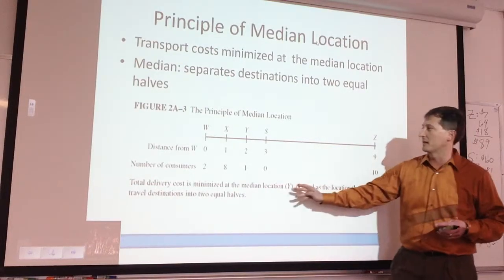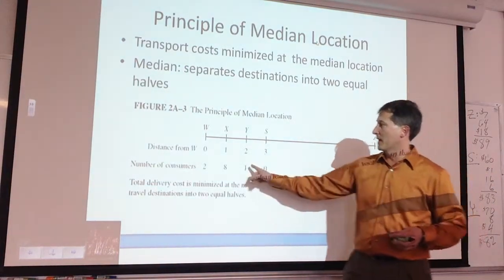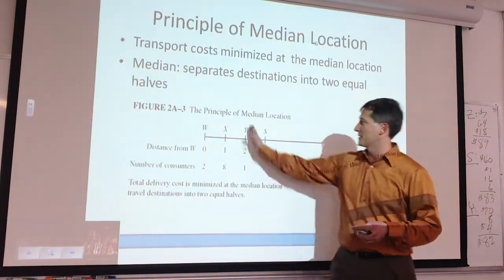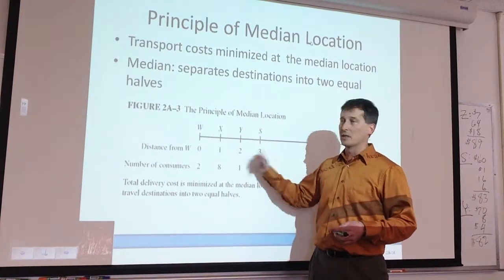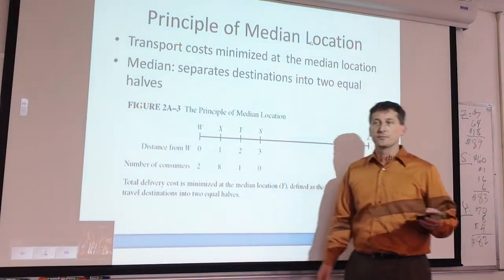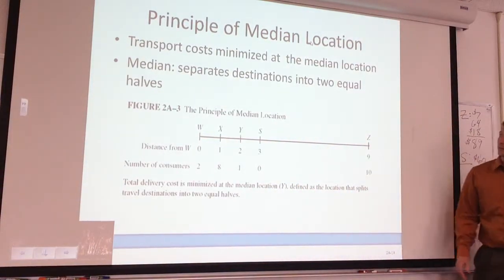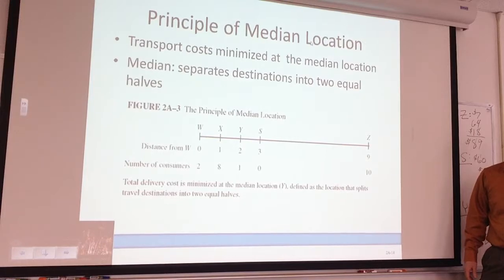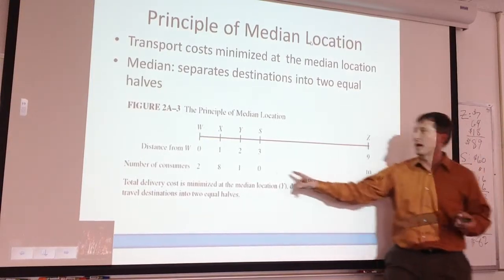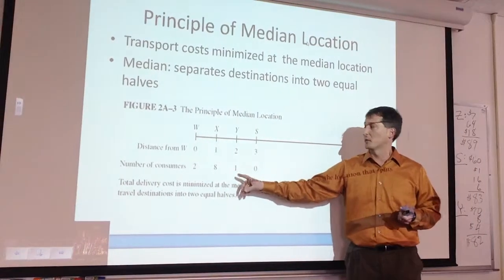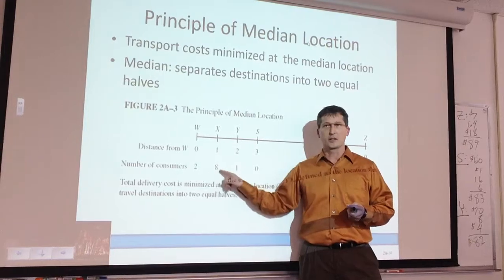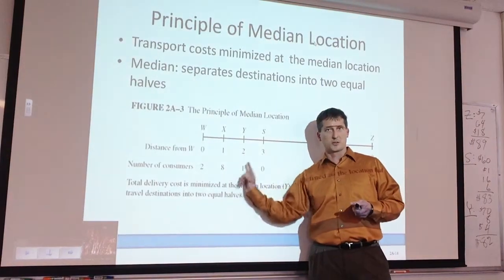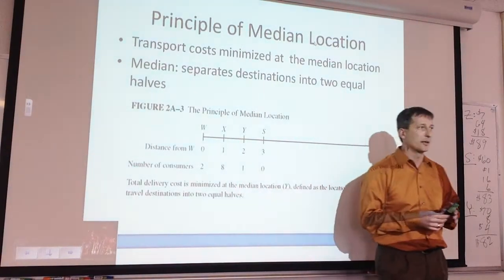For this one we had 10 to the left and 10 to the right, so the median was right at Y. If there was a discrete choice and Y didn't exist, it would be a coin flip between the two adjacent spots — though it would be weighted a little bit by the customer base. If the median falls between two discrete choices, you'd want to go to where there's the most customers closest.